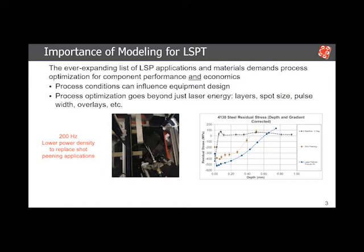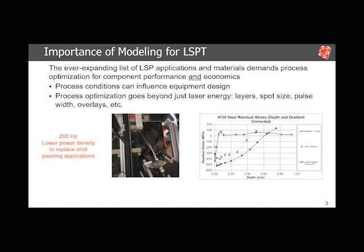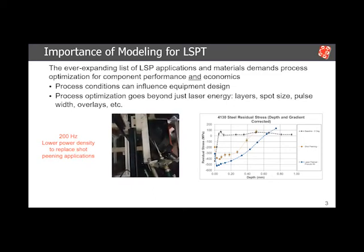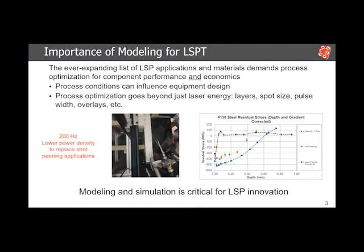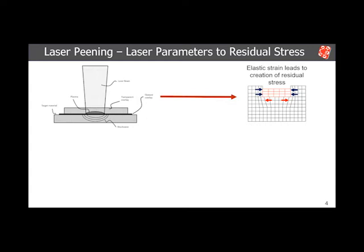This optimization goes beyond just the laser energy. We need to take into account the number of layers we're applying, the spot size, laser pulse width, and overlays. As an example, there's been some mention of using laser peening to replace shot peening for high-throughput applications. We've done some work exploring that field at 200 hertz. For innovating the laser peening process, we need to have modeling and simulation tools available. I wanted to give a quick review of our options.